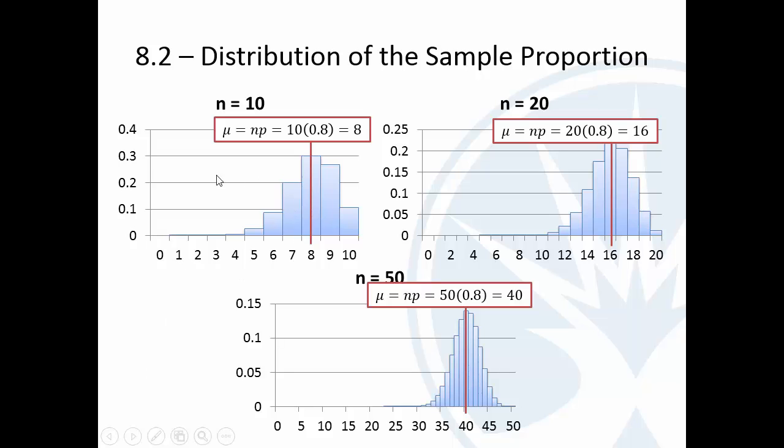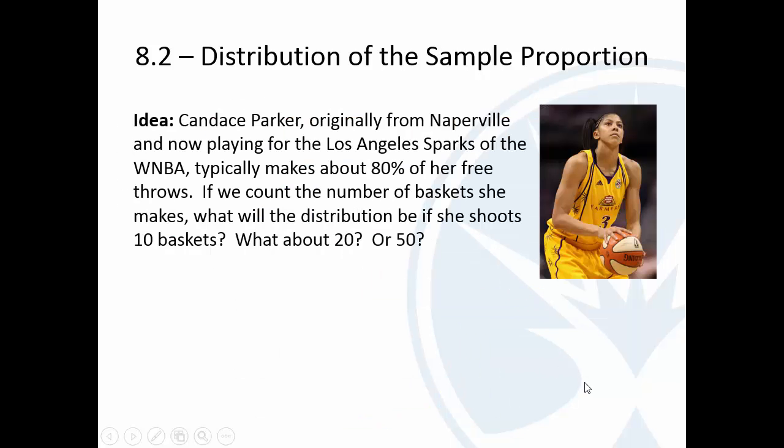Now you'll notice if you look closely, it's possible for her to only make 5 here. That's unlikely, but it's possible. It's not going to happen every time, but it's possible. And so it's a little left skewed. By the time you get up to shoot 50 free throws, it's almost like a perfect bell-shaped curve. And that is actually not coincidence.